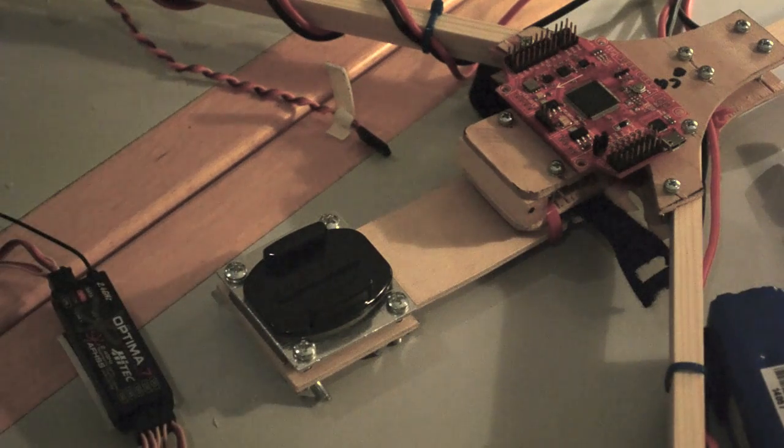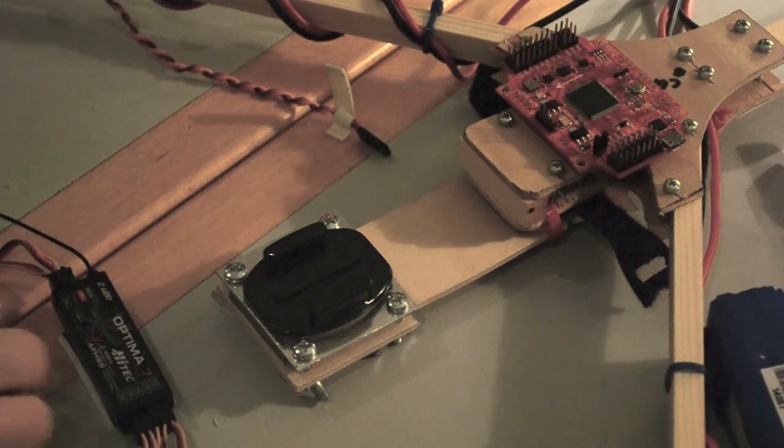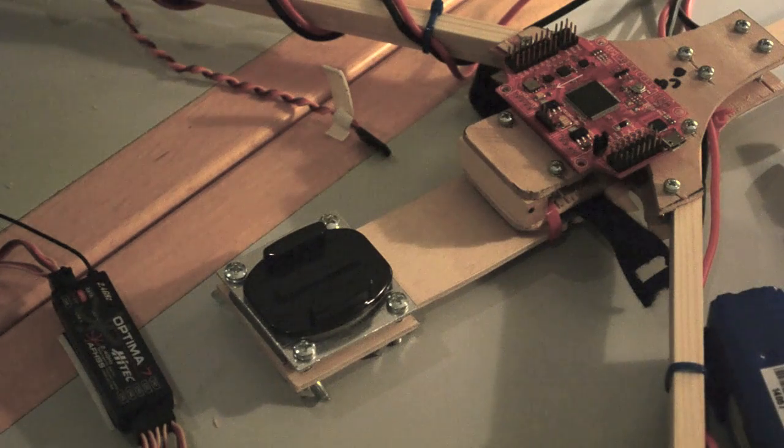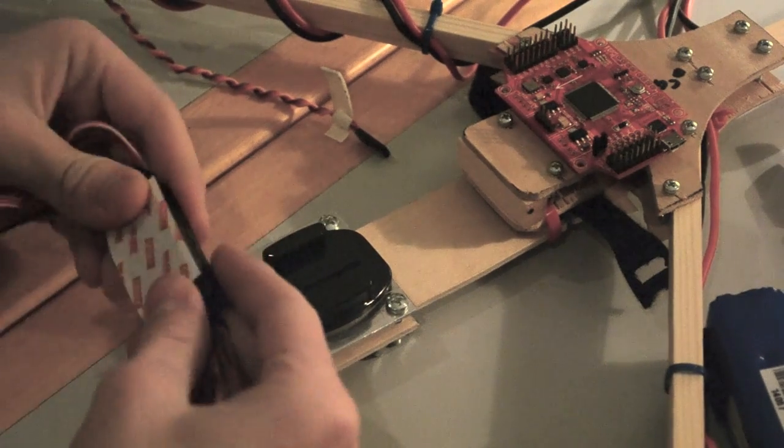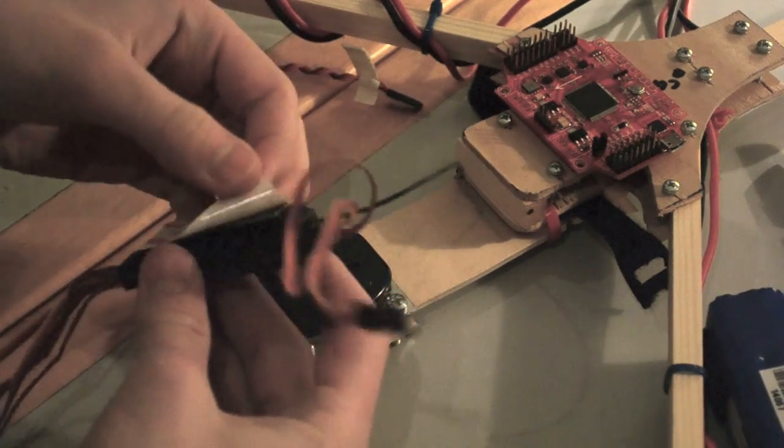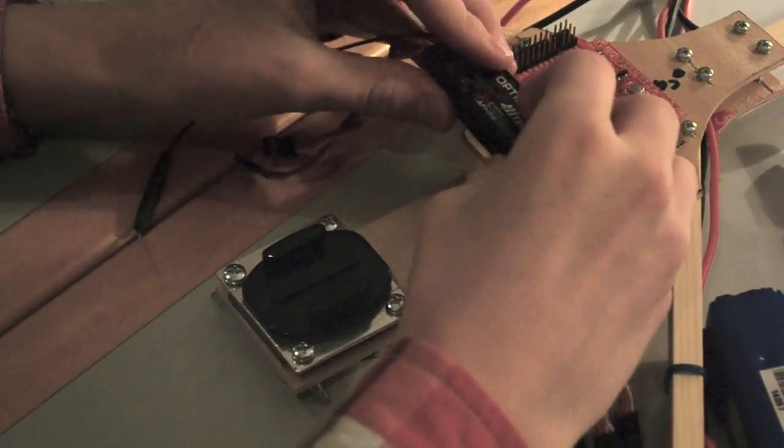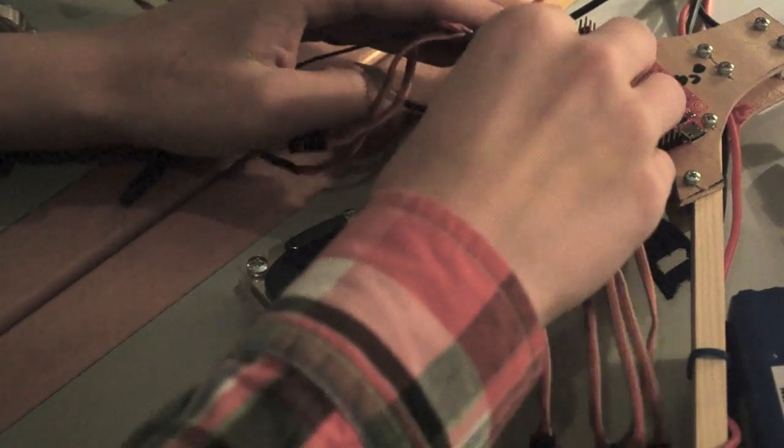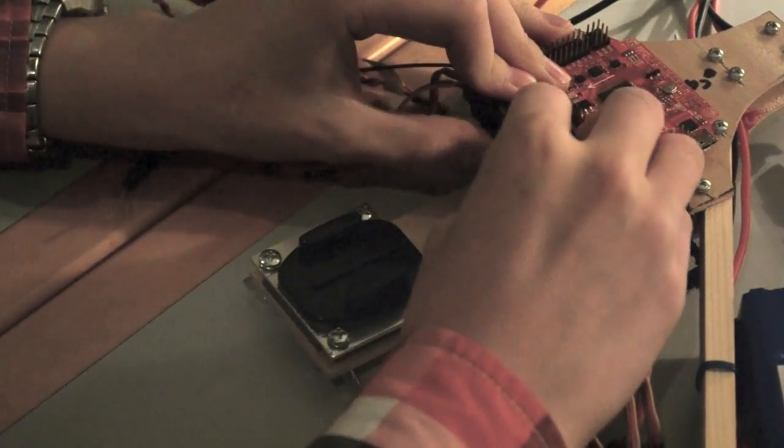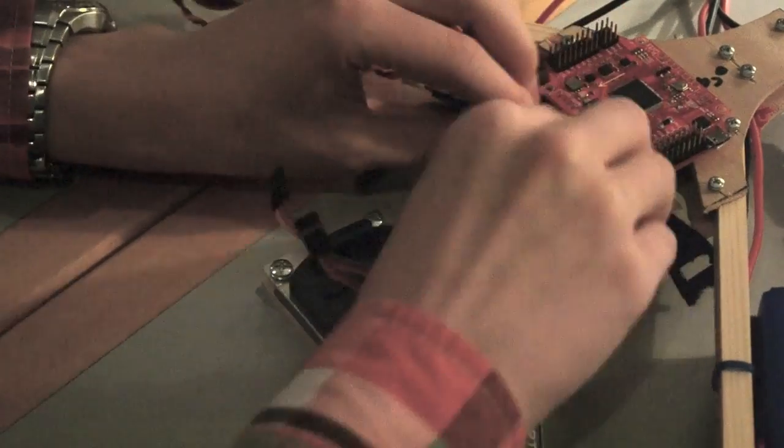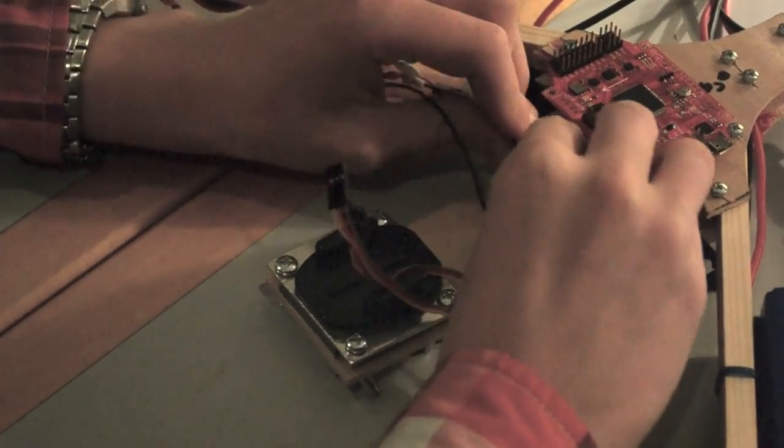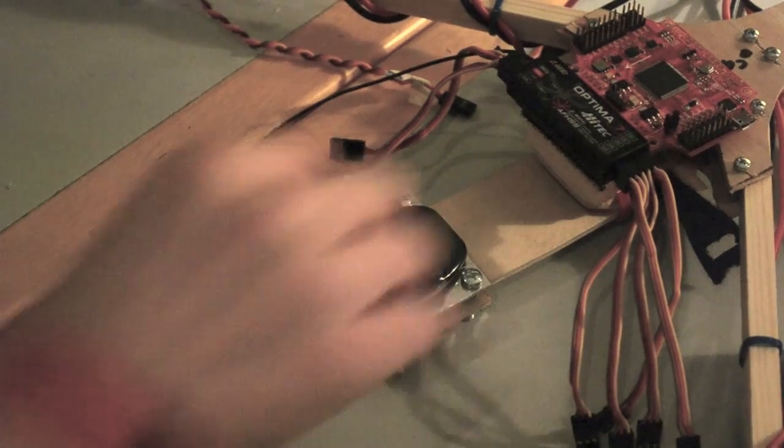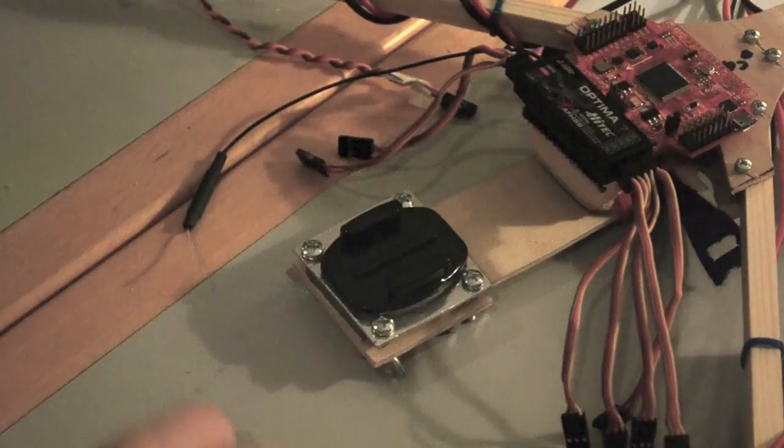Right, now we've got the velcro to mount it with. Just peel this off and place it right there. Okay, now place it right there. Just peel it off and then secure this, probably. So we've got a mount for your receiver right there.